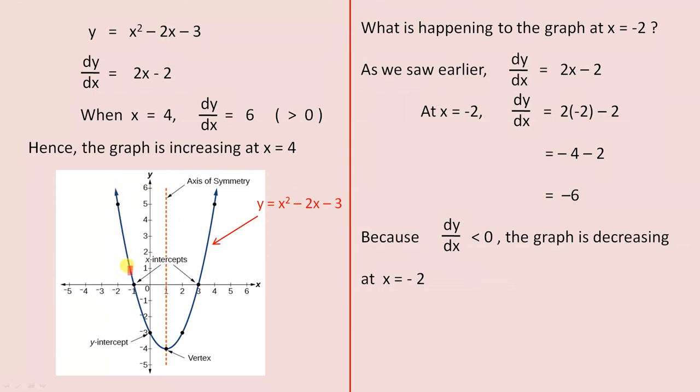As you move, it's all about moving to the right on the x-axis. So as we move to the right on the x-axis, this graph is decreasing when x equals negative 2.